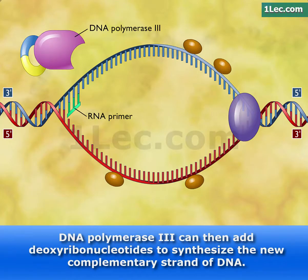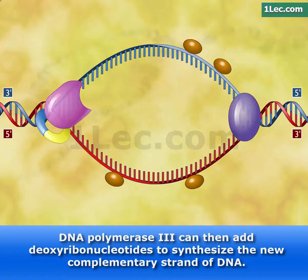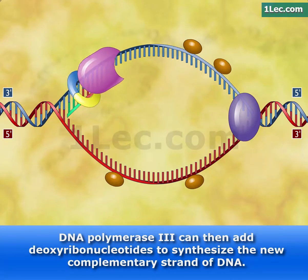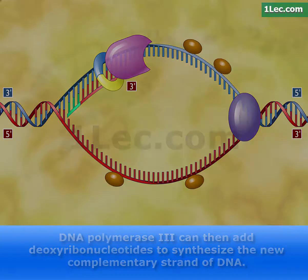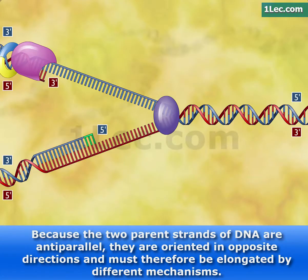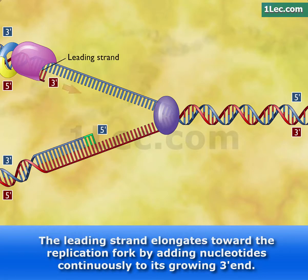DNA polymerase 3 can then add deoxyribonucleotides to synthesize the new complementary strand of DNA. Because the two parent strands of DNA are anti-parallel, they are oriented in opposite directions and must therefore be elongated by different mechanisms. The leading strand elongates toward the replication fork by adding nucleotides continuously to its growing 3' end.